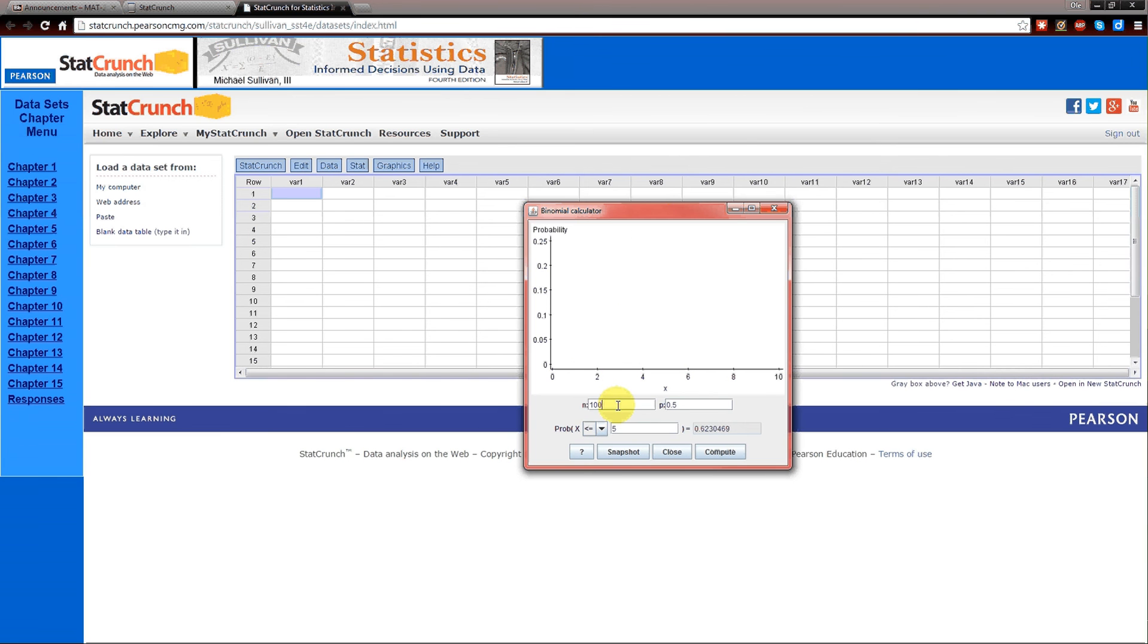n is 100. Since it is a fair coin, the probability of success is 0.5. We do want to find out less than or equal to. And it's less than or equal to 45. Plug in all those numbers. Hit Compute. And not only do we get the answer, the probability is 0.1841008. But we also get a nice little graphic of what's going on here.